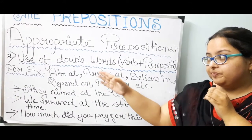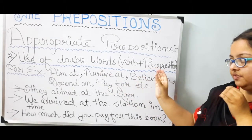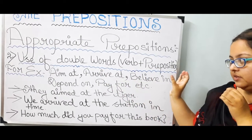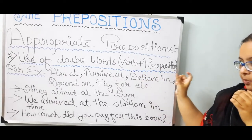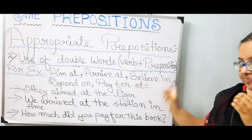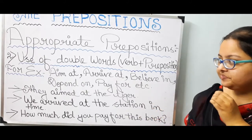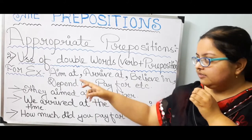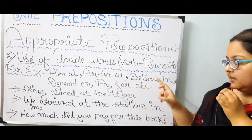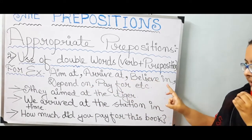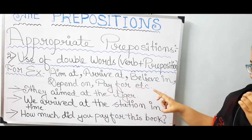Number 2: the use of double words — verb plus preposition — also called complex prepositions. For example: aim at, arrive at, believe in, depend on, pay for, etc.